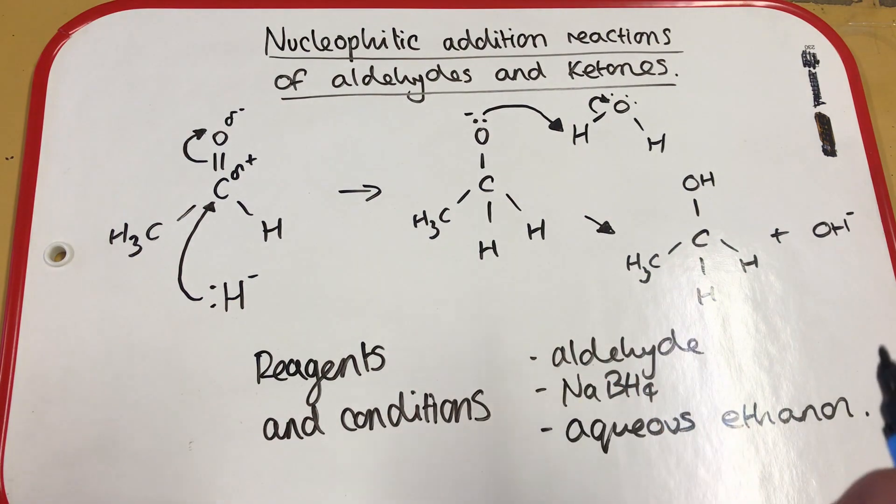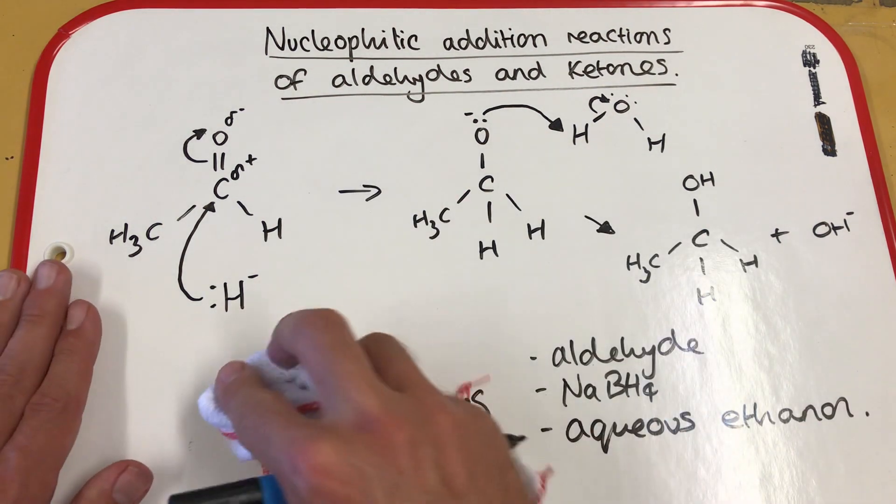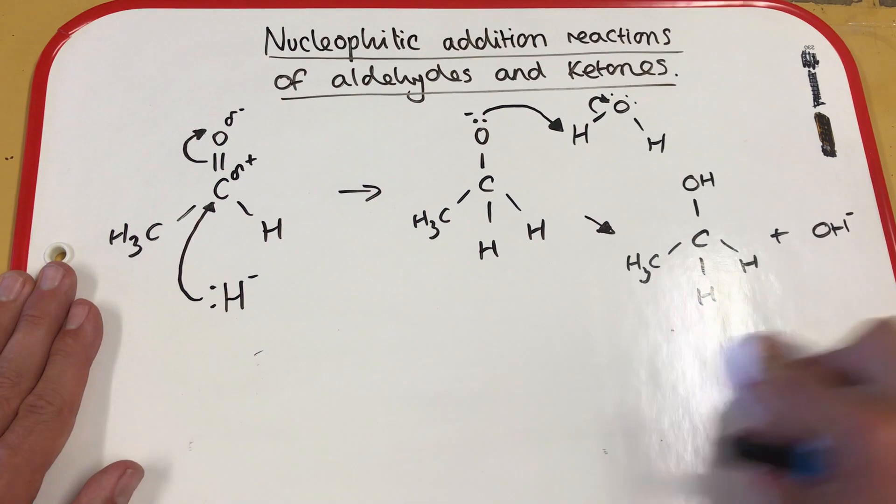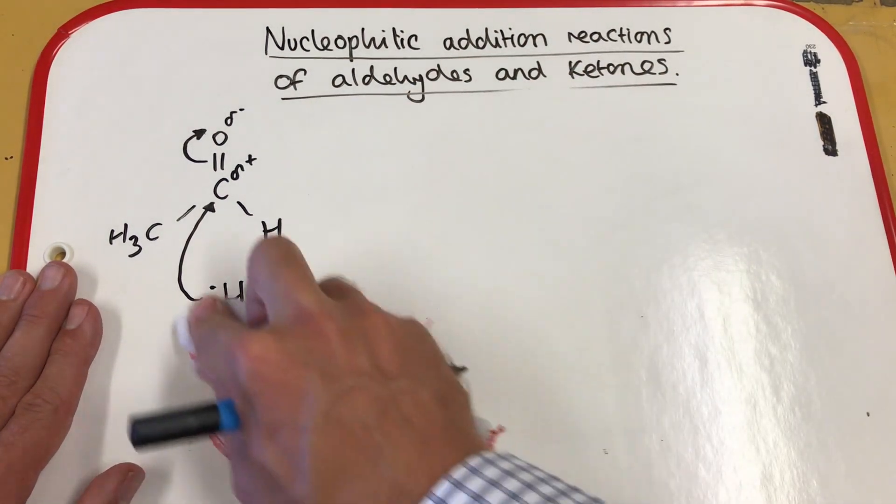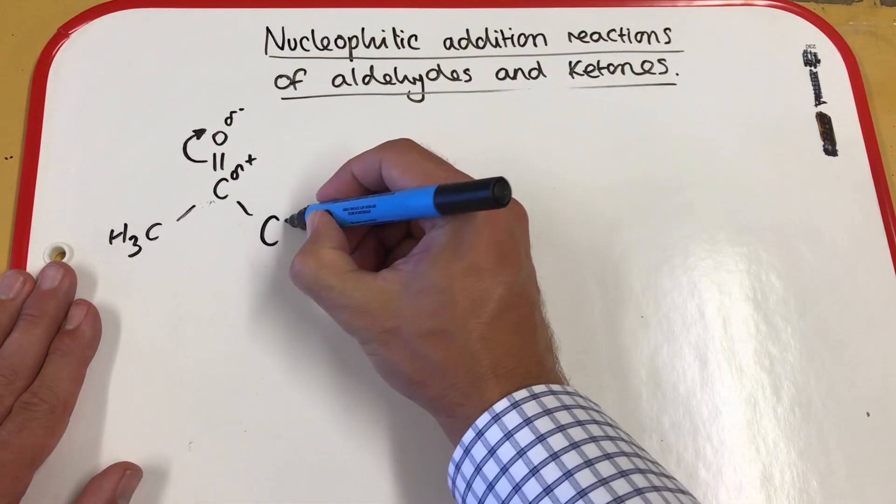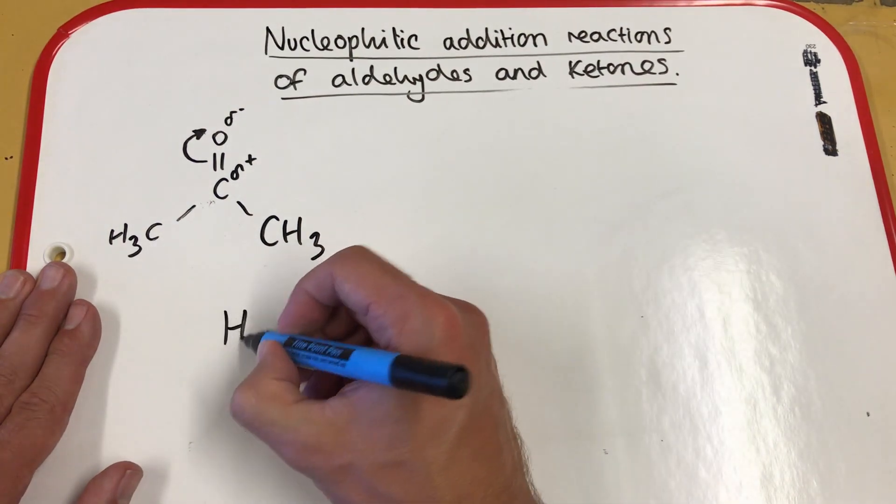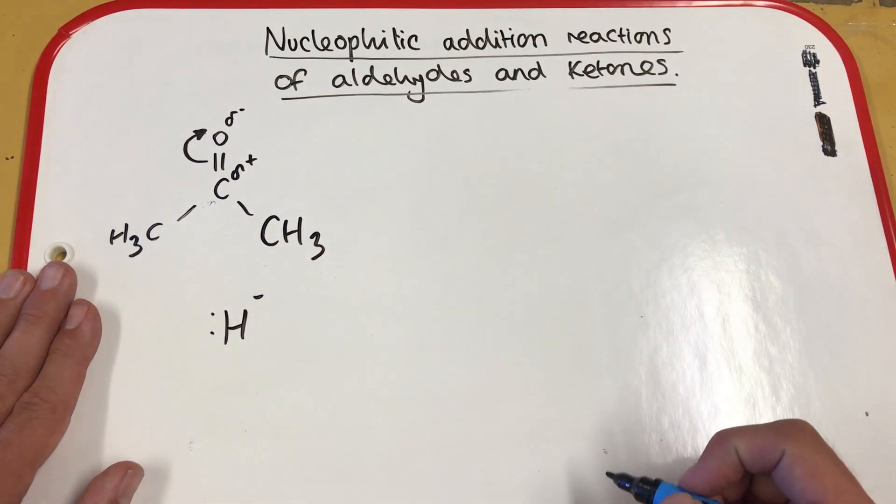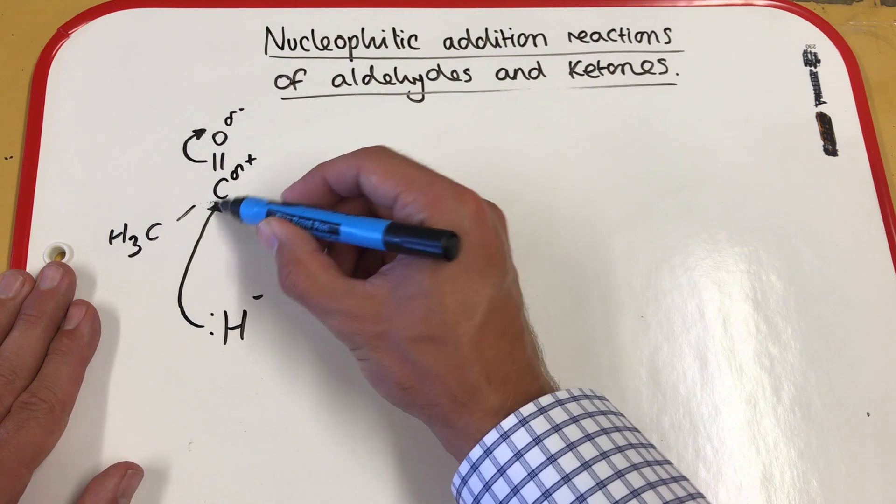For ketones, it's pretty much the same type of mechanism. The same conditions will be used. We'll just run through an example of that now. So if we look at propanone, for our example, we'll be able to see that the mechanism is fairly similar. So here is propanone. Our hydride ion from our reducing agent, NABH4, is our nucleophile donating a pair of electrons to the carbon.